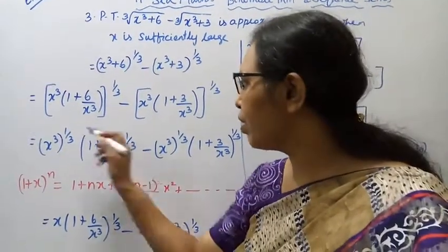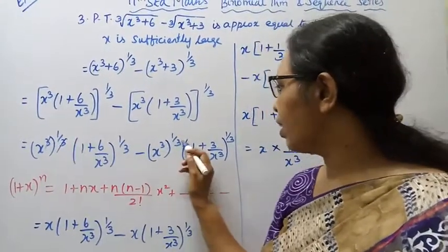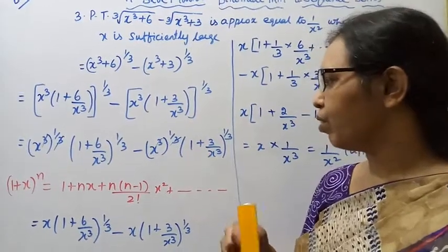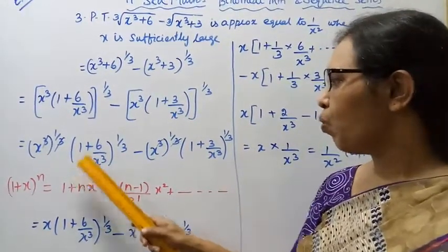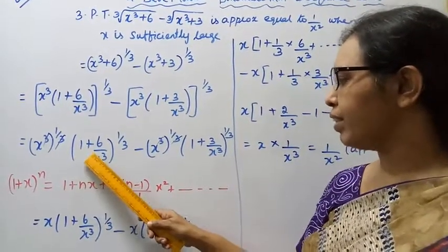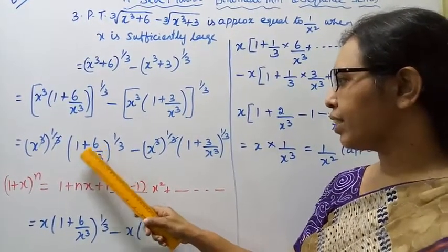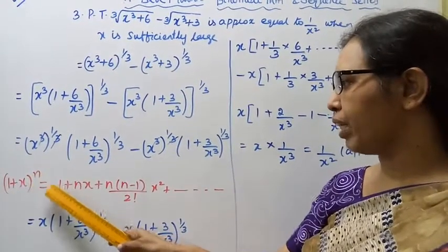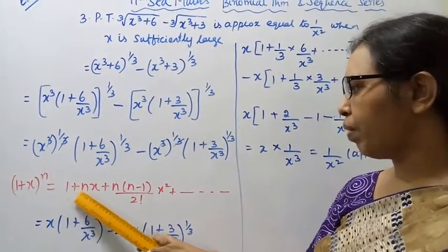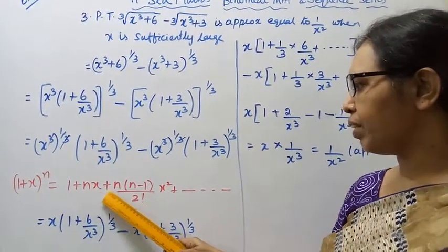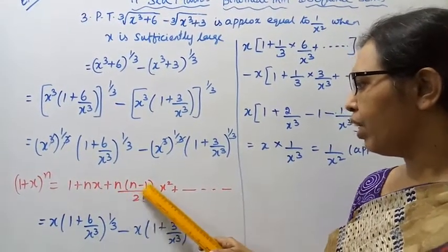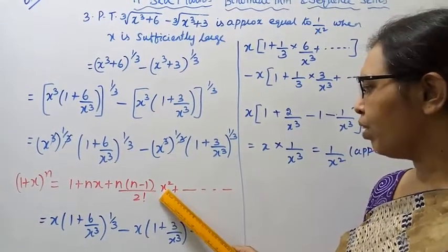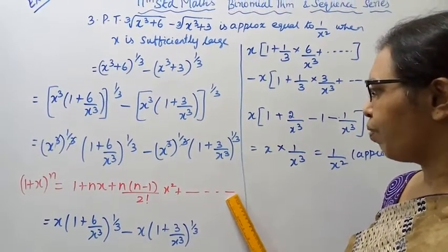We will use the binomial theorem formula: (1 + x)^n = 1 + nx + n(n-1)/2 · x² + etc. Here the 3 and 3 will cancel. Applying the first two terms of this expansion to each expression.